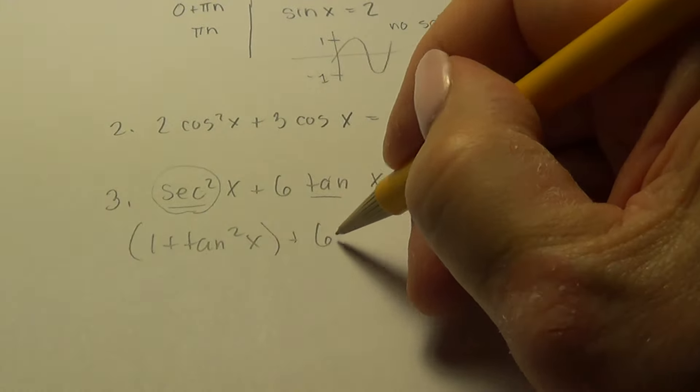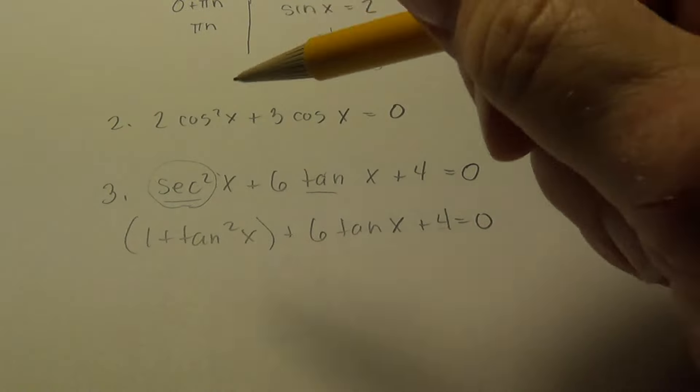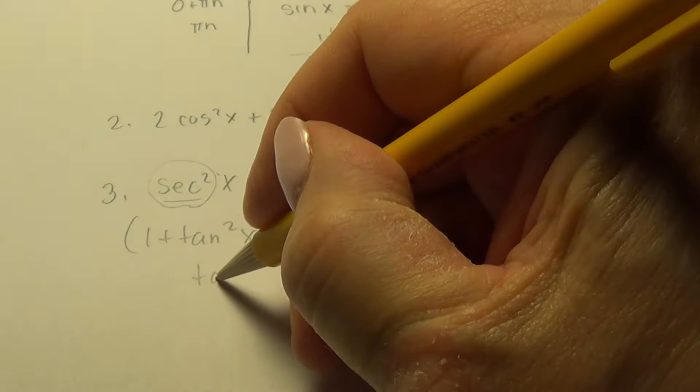So you need to remember your three Pythagorean identities. And sec²x is 1 + tan²x. So now I see a 1 and a 4, so I can add those. So I end up with a 5.